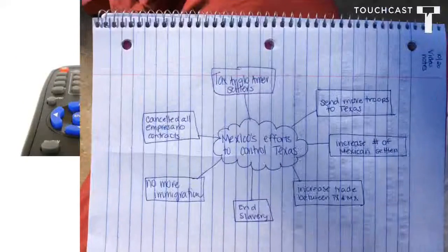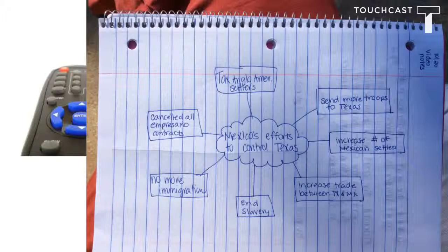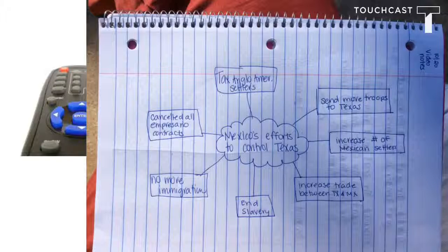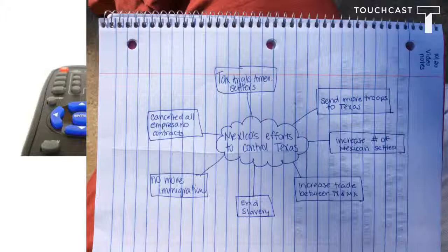Mexico tries to control Texas. Go ahead and write this on your spiral on page 67. Mexico's efforts to control Texas include all of these things on this little picture right here. This should make a lot of sense because a lot of these things deal with the Law of April 6, 1830.